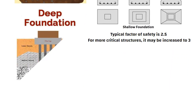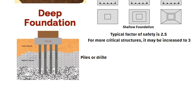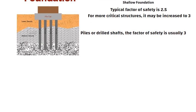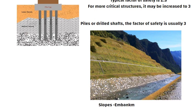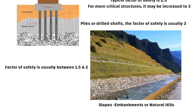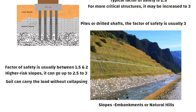For deep foundations such as piles or drilled shafts, the factor of safety is usually 3. When it comes to slopes such as embankments or natural hills, the factor of safety is usually between 1.5 and 2. For higher risk slopes, it can go up to 2.5 to 3. These values help ensure that the soil can carry the load without collapsing, considering the type of foundation or structure and its risk level.